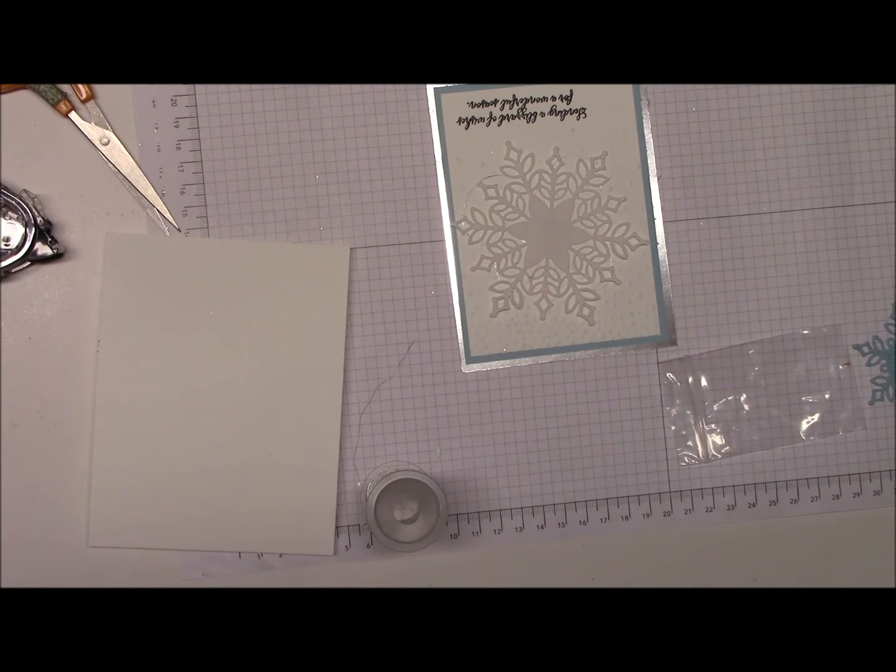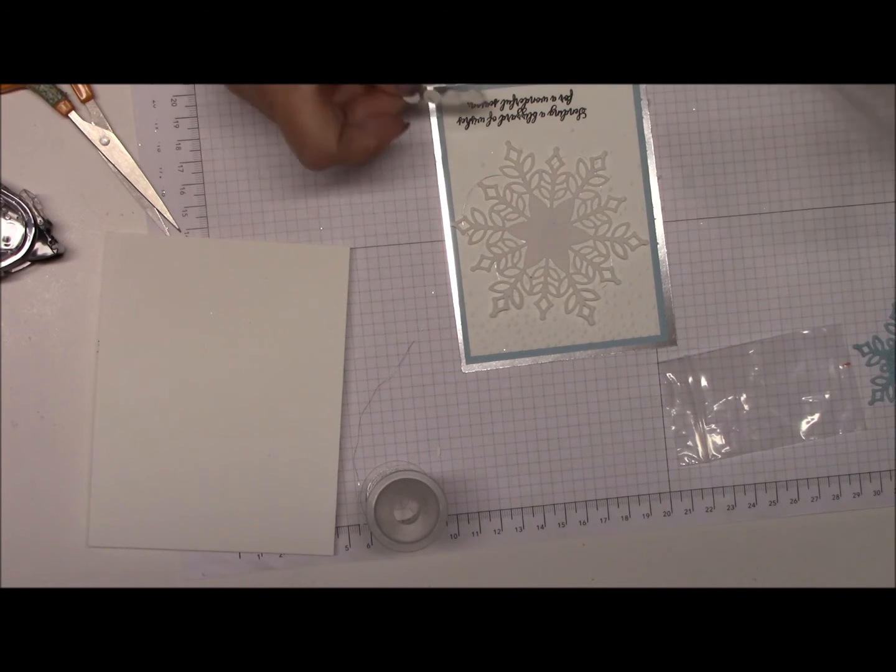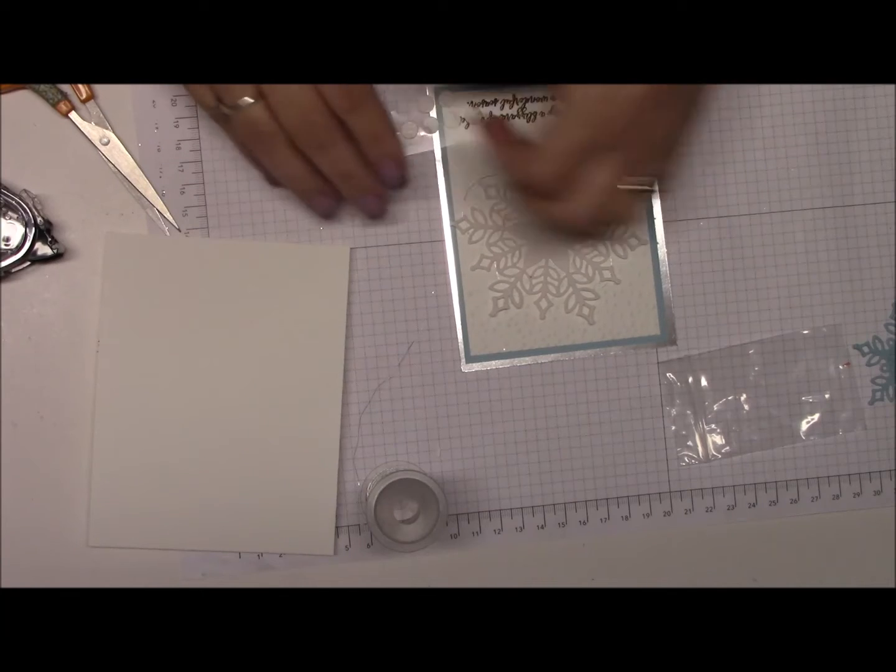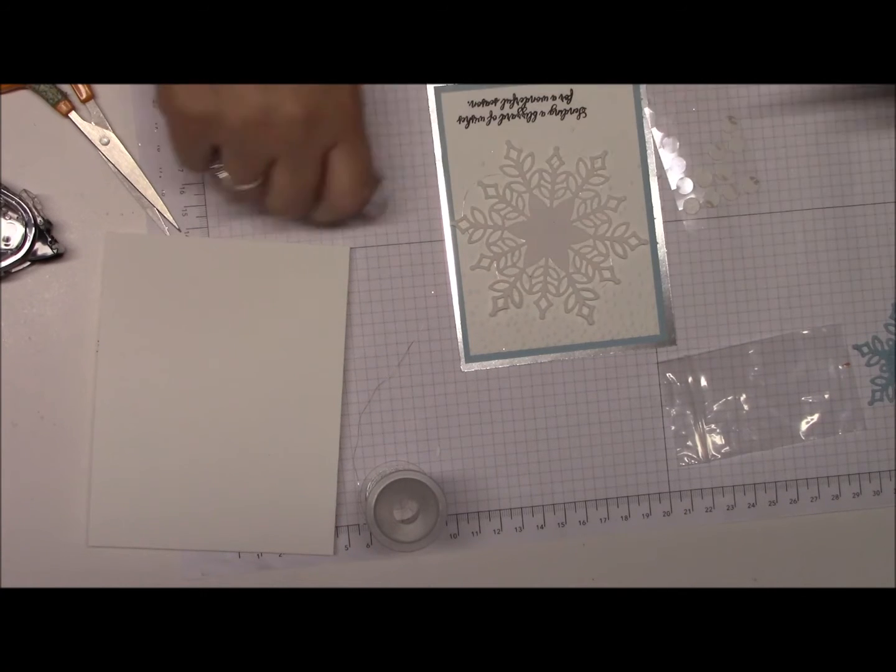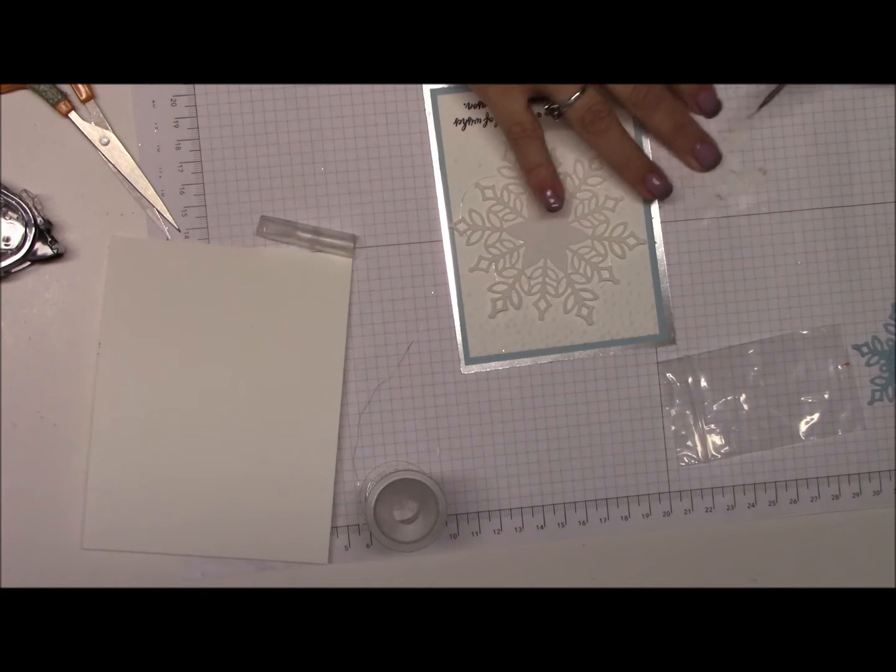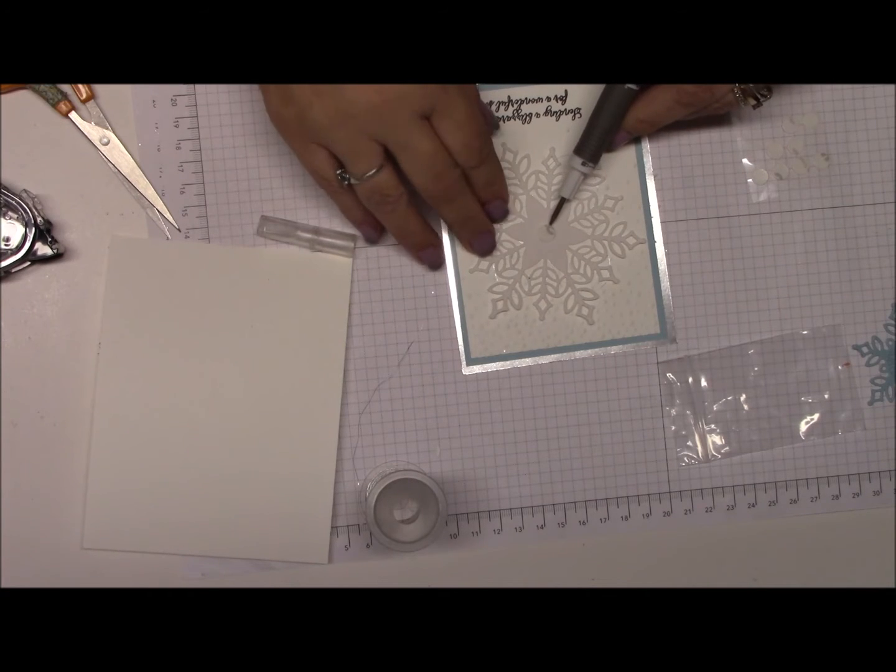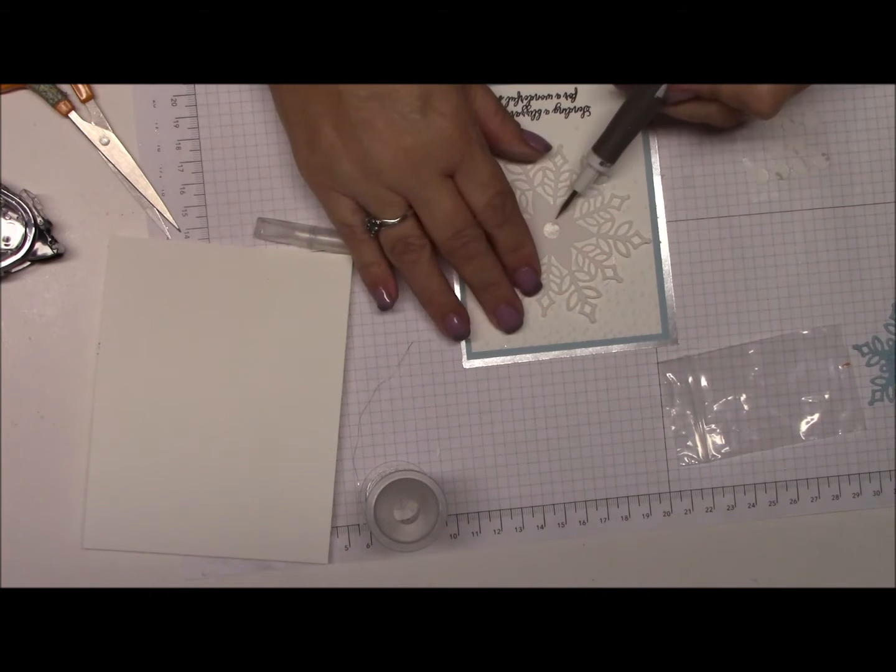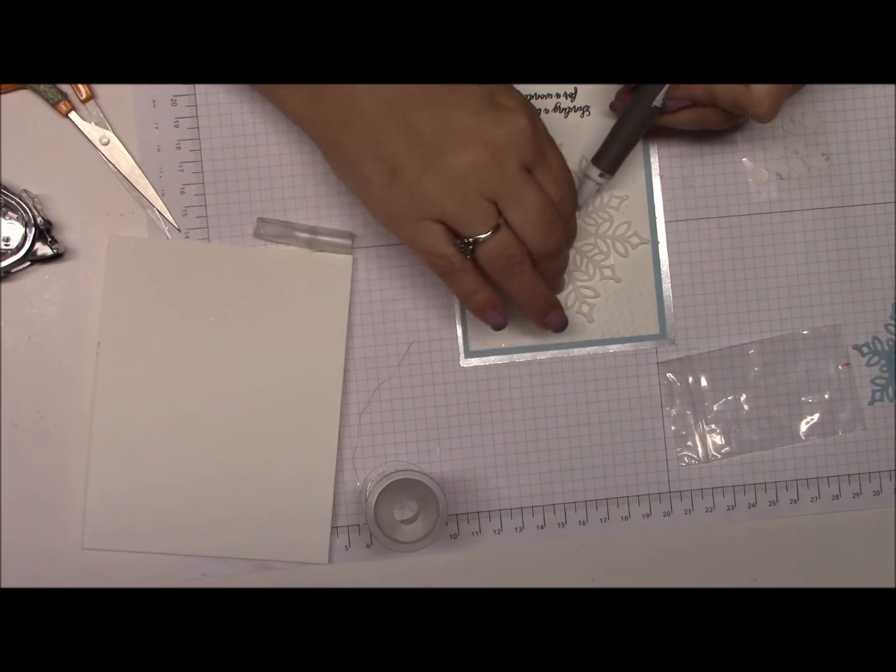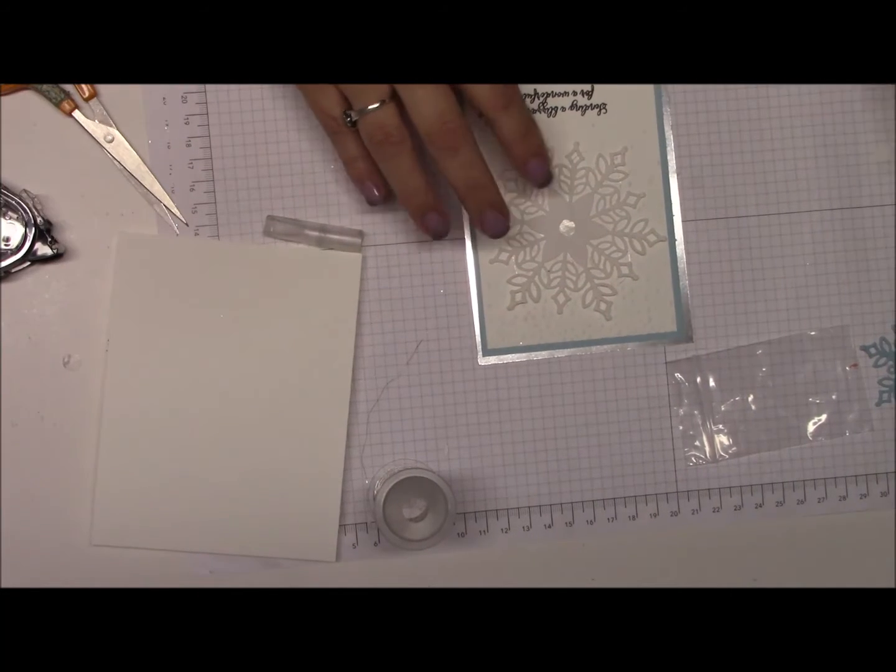And then the next thing we're going to do is we're going to take a glue dot. Now these are just some that I have left over from when I do the paper pumpkin. So I like to use them up when I'm doing videos. But you can use the roll which works really good. And I'm going to take one of the glue dots and put it right in the middle. Because this is velvet here, so it would be harder for it to stick.